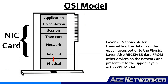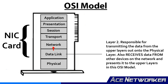Next you have layer 2, which is the data link layer. This data link layer is responsible for transmitting the data from the upper layers out onto the physical layer and the network. It also receives data from other devices on the network from the physical layer below it and takes it up into the upper layers of the OSI model. You also see flow control and error notification done at this data link layer, layer 2.